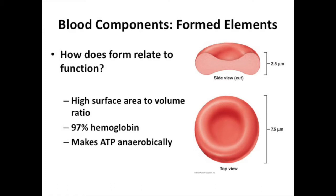Their structure relates closely to their function. They have a very high surface area to volume ratio. The larger an object gets, the smaller its surface area to volume ratio. A very small object like an erythrocyte has a lot of surface area compared to its volume. Since an erythrocyte's job is to transport oxygen — picking it up in the lungs and taking it to the cells — it needs to be easy for oxygen to move in and out. Having a billion tiny red blood cells works far better than having a thousand large ones.